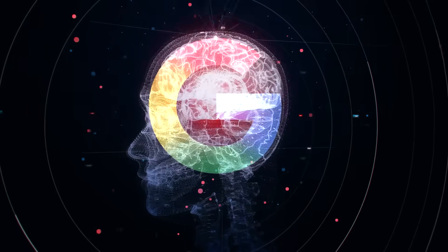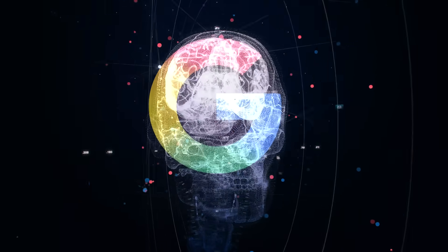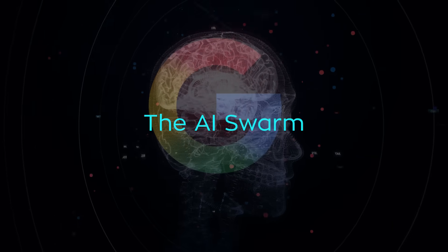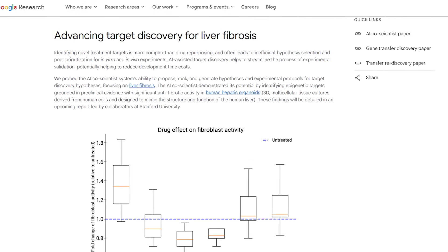There's a scientist-in-the-loop setup. Humans set the research goal and guide it through natural language feedback. But the heavy reasoning is done by the AI Swarm. So, how good is it? Let's start with the first experiment, published in Advanced Science.